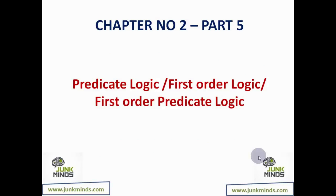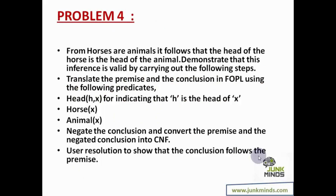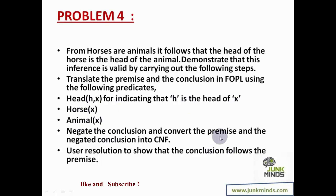A very important and interesting one: from horses are animals, it follows that the head of the horse is the head of an animal. Demonstrate that this inference is valid by carrying out the following steps: translate the premise and conclusion into first-order predicate logic using the predicates head(H, X), horse(X), and animal(X). Then negate the conclusion and convert the premise and negated conclusion into CNF.